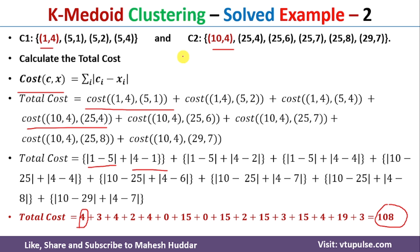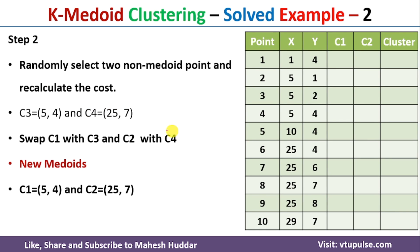We selected two random medoids and got a total cluster cost of 108. Before confirming these as the final clusters, we need to select two different medoids and calculate the total cost of that new assignment for comparison. I will select (5,4) as the first new medoid and (25,7) as the second new medoid — replacing C1 with (5,4) and C2 with (25,7).